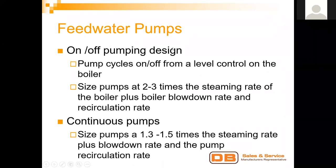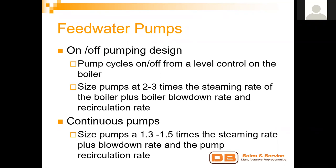Feed water pumps: for on-off pumping, we size pumps at two to three times the steaming rate of the boiler. We take the boiler's steaming rate, convert to pounds per hour of steam, divide by 500 to get GPM, then multiply by two to three times to ensure the pump has more than enough water each time the boiler kicks the pump on. For continuous pumps, we divide the steaming rate by 500 for GPM, then multiply by 1.3 to 1.5 times the steaming rate, plus blow down rate and pump recirculation to avoid deadheading.